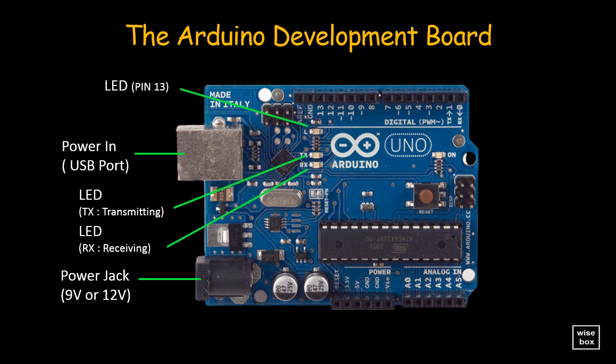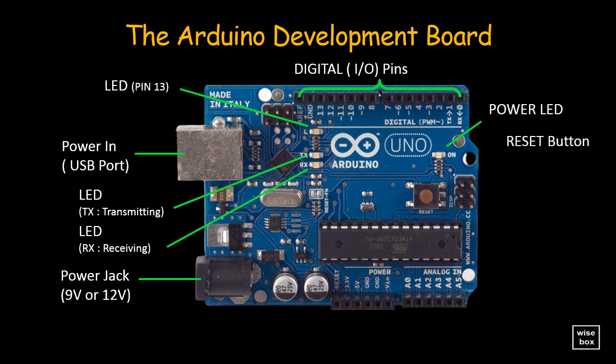LED pin 13 is used for troubleshooting — this LED is incorporated into your sketch to show if your program is running properly. The digital input/output pins are used for digital inputs, outputs, power, and ground. The power LED indicates the Arduino is on, and the reset button is used to manually reset the Arduino, which makes the code restart.